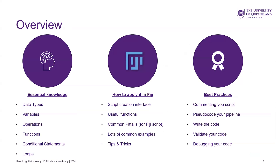The overview is going to cover essential knowledge — and this isn't specific to Fiji, but we'll discuss it in the context of macro writing in Fiji, though you can apply it to other languages. Things like data types, variables, operations, functions, conditional statements, and loops are all common macro elements. Whether in Python or other languages, they all require these things, implemented slightly differently. Then we'll apply what we've learned to Fiji specifically — how to bring up the script creation interface, what the useful functions and commands are, what the common pitfalls are, and some examples. By the end, you should know how to do all the common stuff.